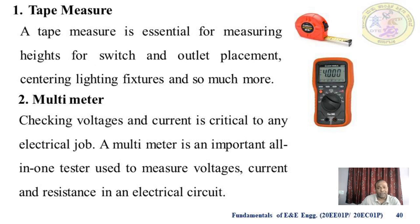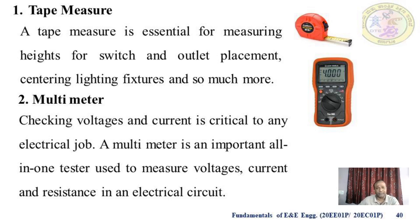A tape measure is essential for measuring heights for switch and outlet placement, centering lighting fixtures, and more — without it we cannot fix electrical switchboards, switches or plugs in the proper places. A multimeter is used for measuring current, voltage, resistance, power, temperature and many more parameters. It is mainly used for measurement of current, voltage and resistance in an electrical circuit.